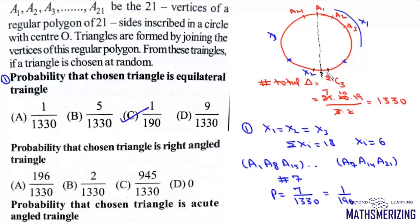In this case, it is not possible to choose a right-angled triangle. So the probability of choosing a right-angled triangle will be simply 0.